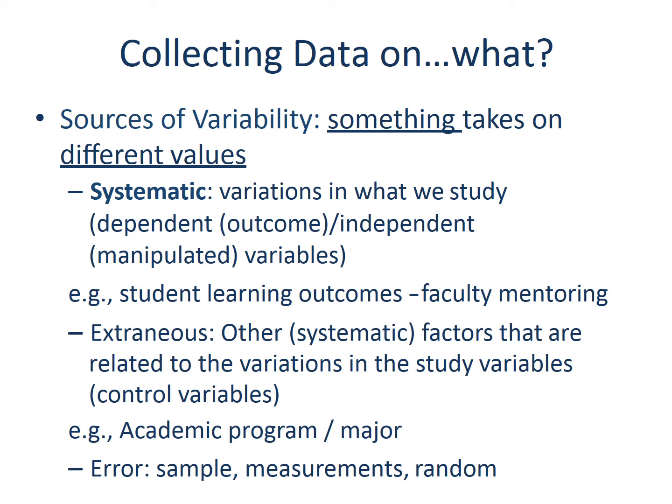Yet, we also want to consider other systematic factors that are related to the variations in the study variables. For example, a student's academic major might influence both student learning outcomes and faculty mentoring. Therefore, you can collect this information in your data so you can account for this factor later in your analysis. These are often referred to as control variables.